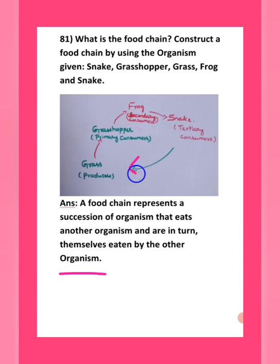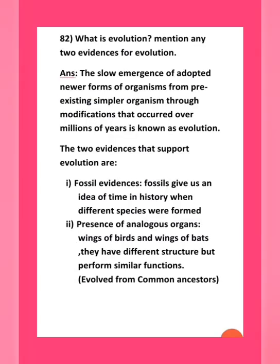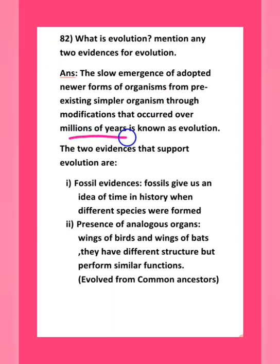Question number 82: what is evolution? Mention two evidences. The slow emergence of newer adapted forms of organisms from pre-existing simpler organisms through modifications over millions of years is called evolution. Two evidences: fossil evidence — fossils indicate which species existed at different periods in history; and analogous organs — for example, wings of birds and wings of bats have different structures but perform similar functions, suggesting common ancestors.